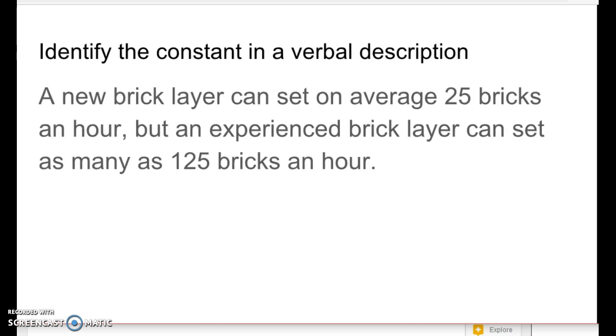Identify the constant in a verbal description. So here's a verbal description. A new bricklayer can set an average of 25 bricks an hour, but an experienced bricklayer can set as many as 125 bricks an hour. There's actually two constants in here. For a new bricklayer, the constant is 25 bricks per hour. But an experienced bricklayer, the constant is 125 bricks an hour.